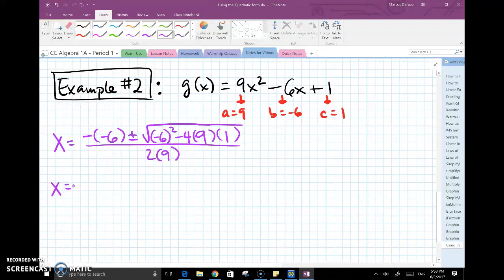And once again, this is just about breaking it down. This negative negative 6 becomes positive 6. The opposite of a negative is a positive. Inside the radical, I would have 36 from negative 6 squared, and then I would have minus 36 when I multiply negative 4 with 9 and then with 1. And this is all over 18 from 2 times 9.